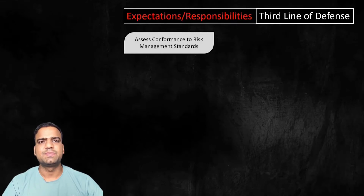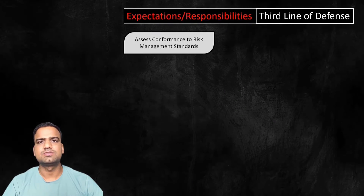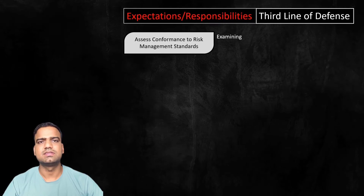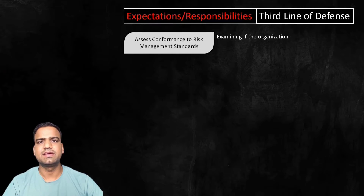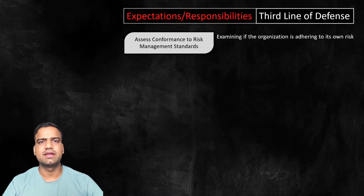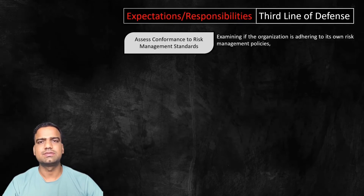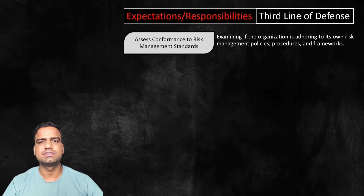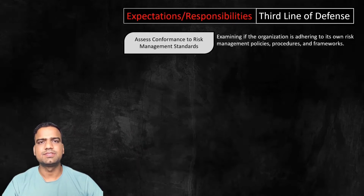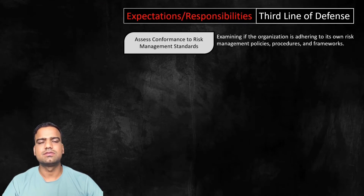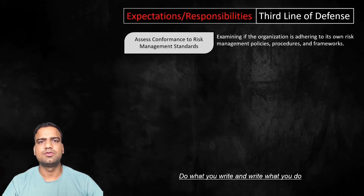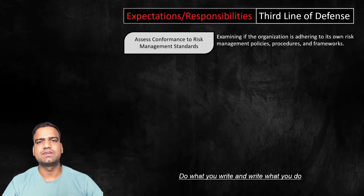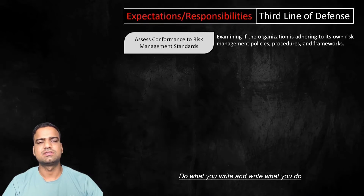What are the expectations from the third line of defense? The expectation is to assess conformance to risk management standards. This involves examining whether the organization is adhering to its own risk management policies, procedures, and frameworks. There is a famous quote: 'Do what you write, and write what you do.' The internal audit function ensures this.